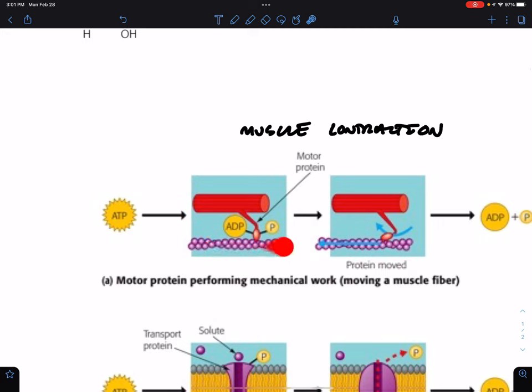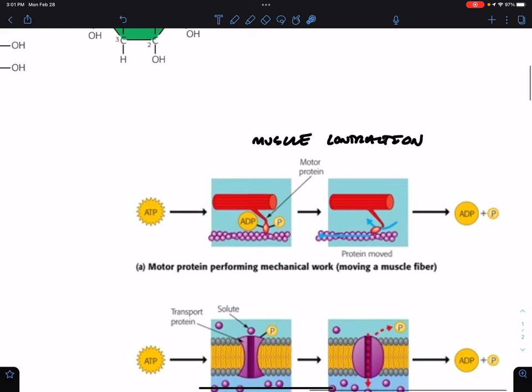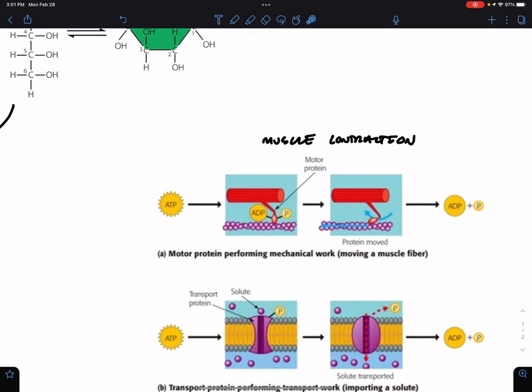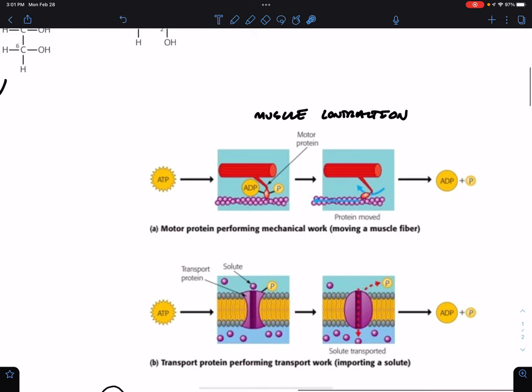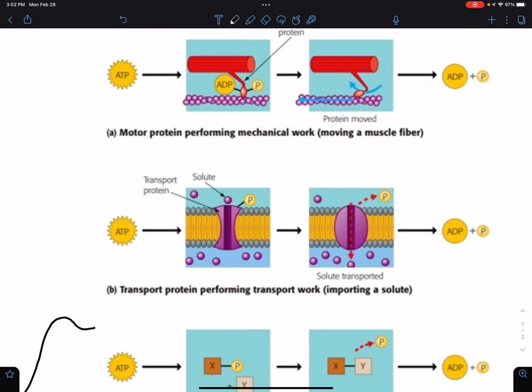Which then interacts with a cytoskeleton component called actin. And the hydrolysis of ATP into ADP and phosphate, free phosphate, causes the motor protein to move. This is called the power stroke. So the energy that causes this motor protein to move is because ATP is broken up into adenosine and free phosphate. In addition to that, we've talked about active transport.